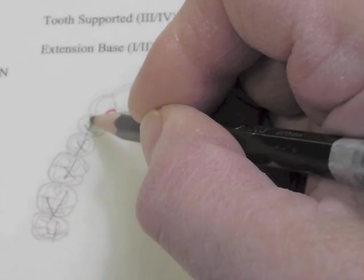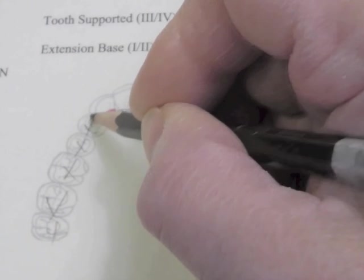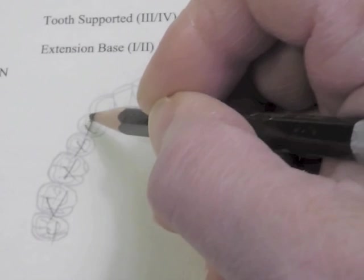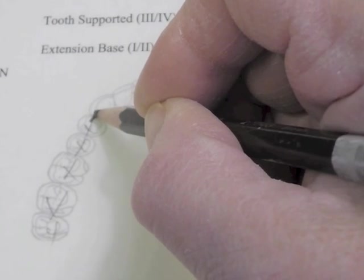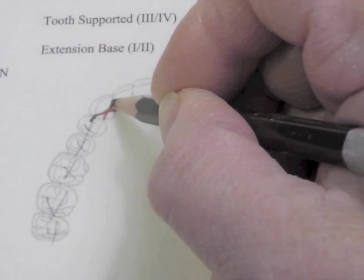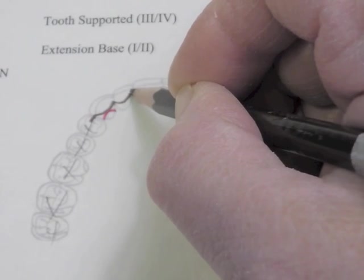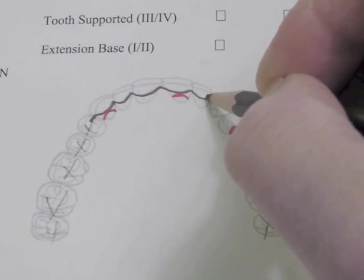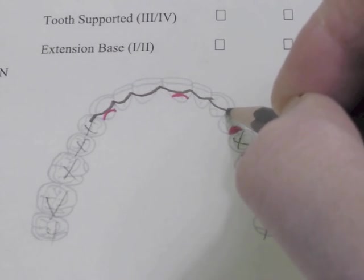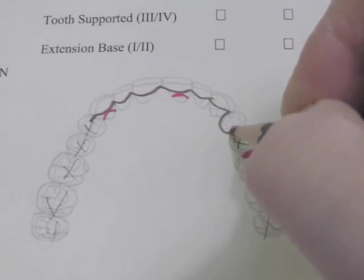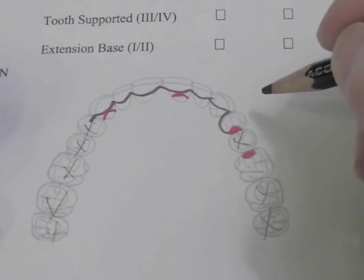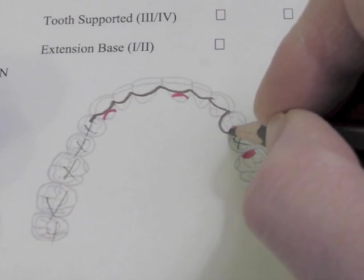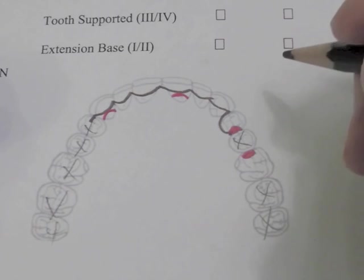Now on our canine, we're going to have a guide plate because we're going to have a wrought wire clasp here. Our guide plate would come up here, and then we would have plating that would cover that cingulum, swing up to the embrasure, cover every cingulum, swing up to the embrasure, go from contact point to contact point. Then we're going to plate this premolar over on this side, and that would have a slight guide plate right there.